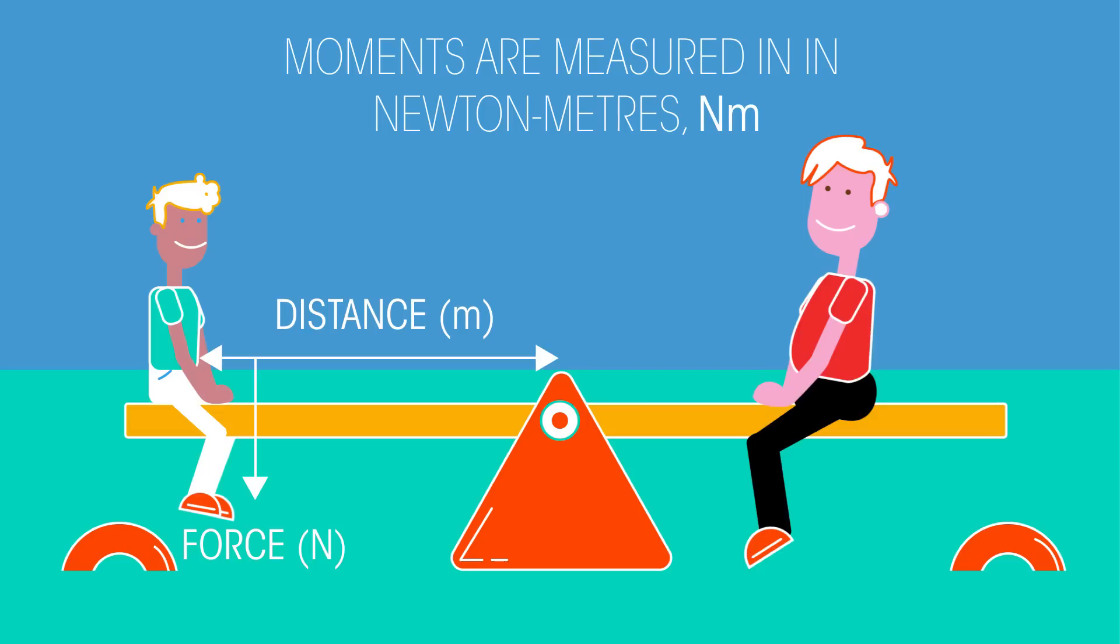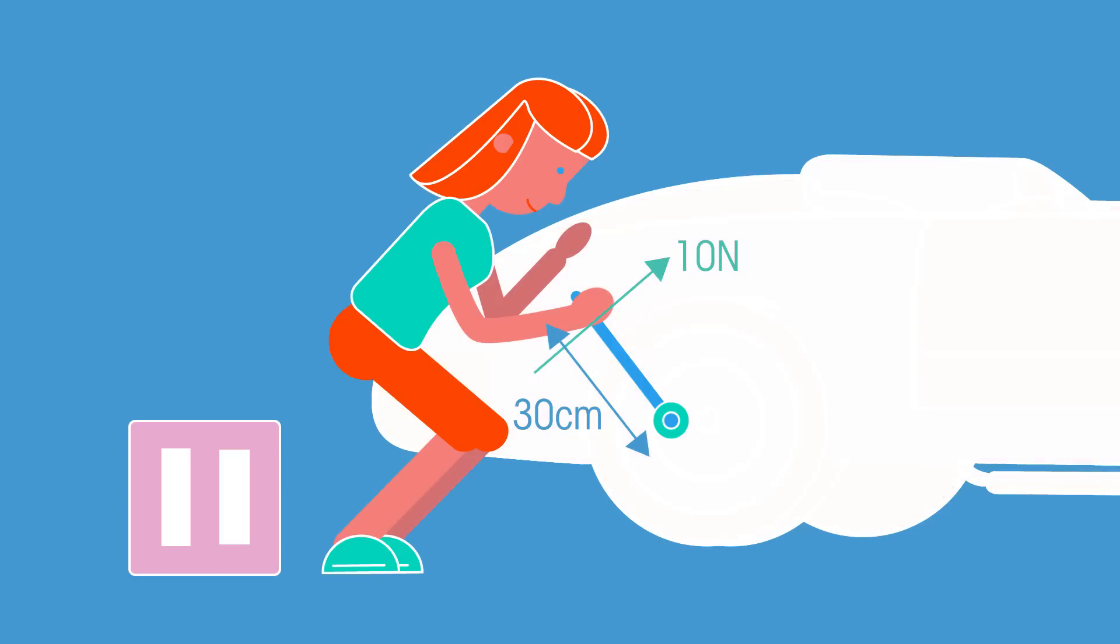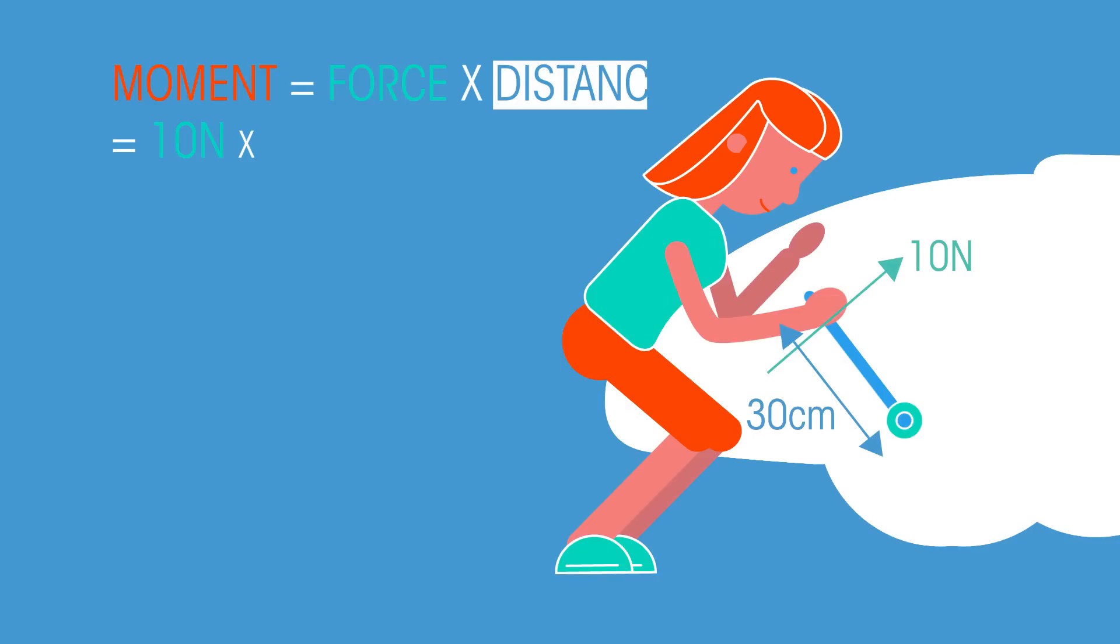Note that the distance must be the perpendicular distance from the pivot to force. Here's another example. Can you work out what moments the woman is applying to tighten the wheel nut? Pause the video and work it out. Did you get 3 newton metres? Were you careful to change the 30 centimetres into metres?